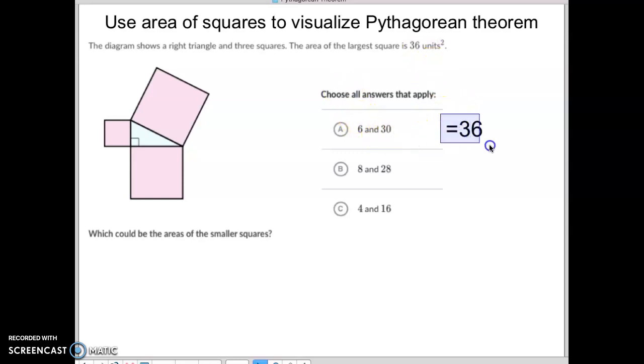Well 6 plus 30 is 36, so that one works. 8 plus 28, that's 36, so that one works. 4 plus 16, that's 20, so that one does not work. So some of them are that easy.